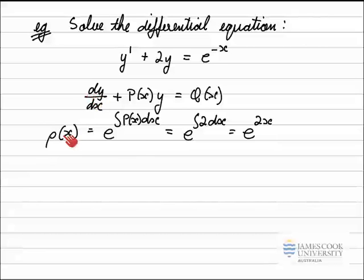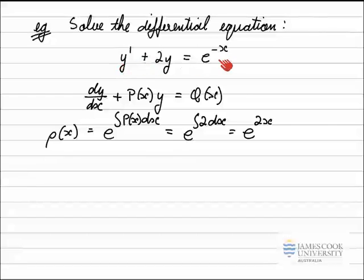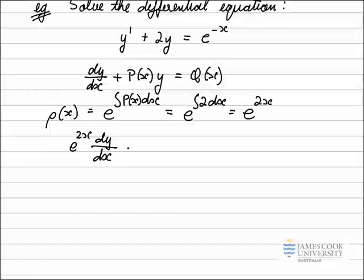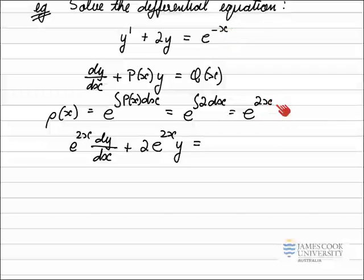Note that we can only find the integrating factor once the differential equation is in the correct standard form. The next stage is to multiply the differential equation by the integrating factor. Multiplying e^(2x) by the left-hand side gives e^(2x) · dy/dx + 2e^(2x) · y. On the right-hand side, I'm multiplying e^(2x) by e^(-x). Using index laws — keep the base, add the indices — 2x minus x equals x, so the right-hand side becomes e^x.